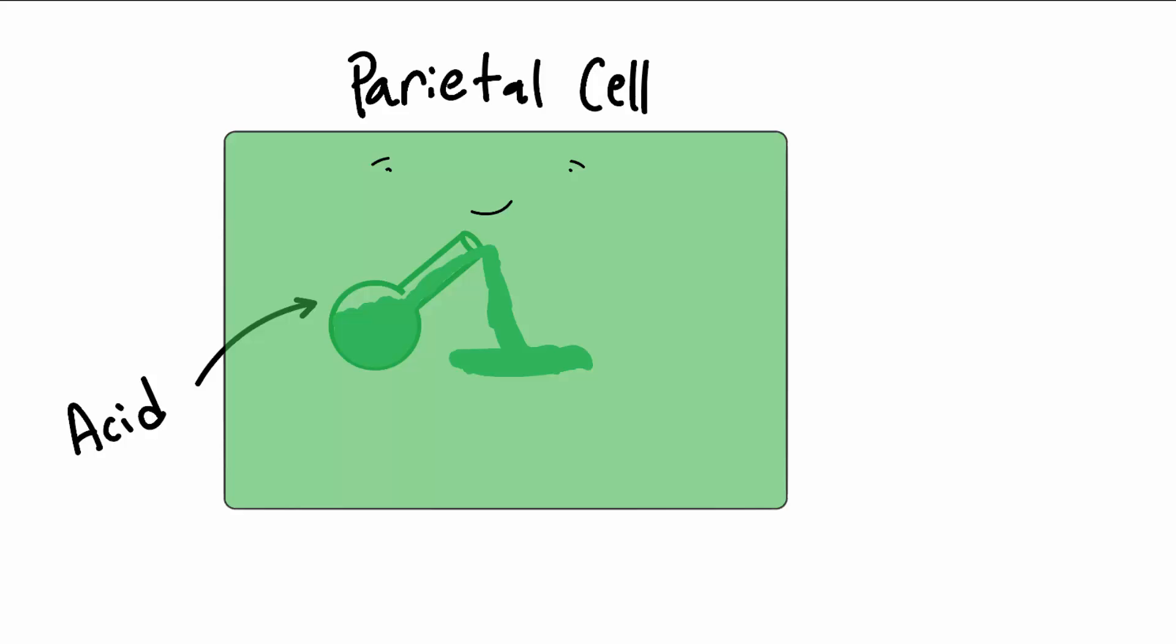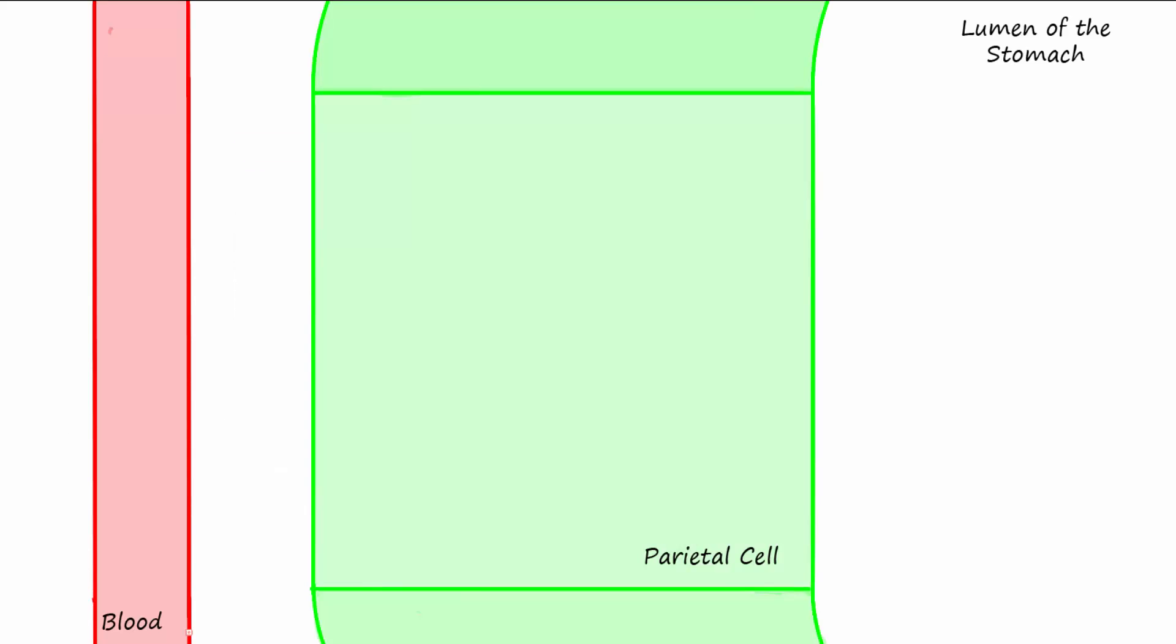It's pretty cool that these cells are able to do this, but how is it done? The parietal cells are located in the gastric mucosa. Let's begin with the three main ingredients we need in order to make hydrochloric acid. They are carbon dioxide, water, and chloride ions.